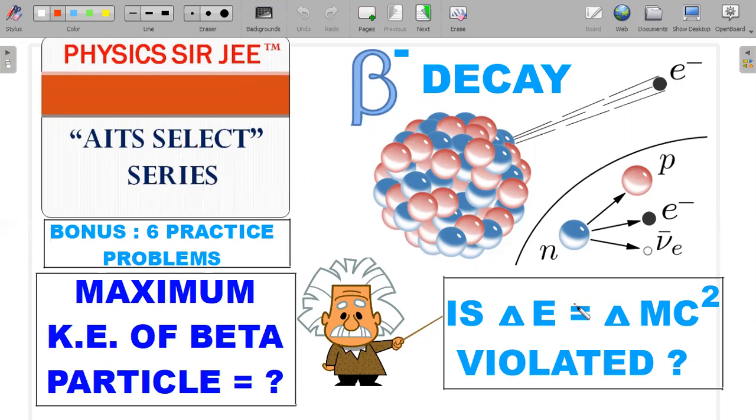That's a concept of beta minus decay and its energy analysis. We'll take up a problem that has appeared in one of the AITS in the past and try to elaborate more on that. Also, take up six, not one, six practice problems at the end whose solutions I'll be posting in the upcoming videos.